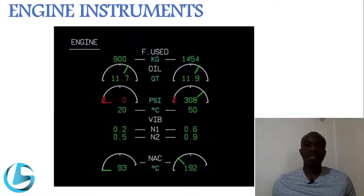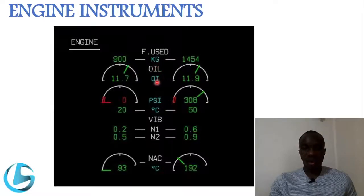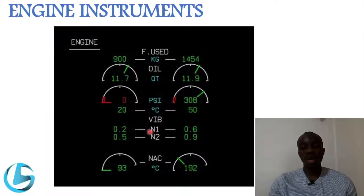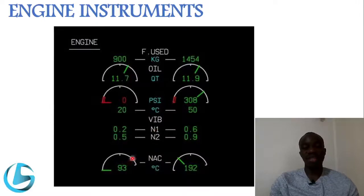Next we look at the secondary aircraft engine instruments on this display. We have fuel used in kilograms, oil quantity in quarts, oil pressure in PSI, and oil temperature in degrees centigrade. For the condition instruments, we have vibration: N1 is the low pressure spool vibration and N2 is the high pressure spool vibration. On some aircraft you also have a nacelle temperature indicator that indicates the temperature at the engine nacelle.